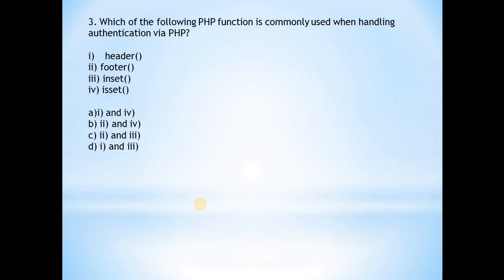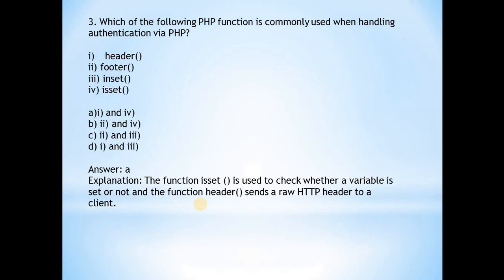Next, which of the following PHP functions is commonly used when handling authentication via PHP? Answer is a, options one and four: header() and isset(). The function isset() is used to check whether a variable is set or not, and the function header() sends a raw HTTP header to a client.